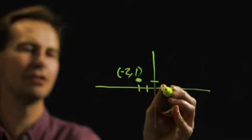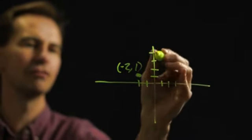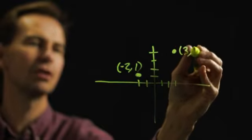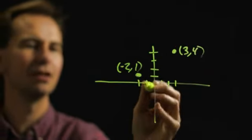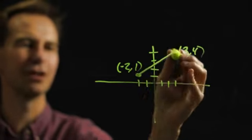And maybe we have another one that's three units to the right and four units up. So, (3, 4) would be that point. What we want to do is figure out how far apart they are in a straight line.